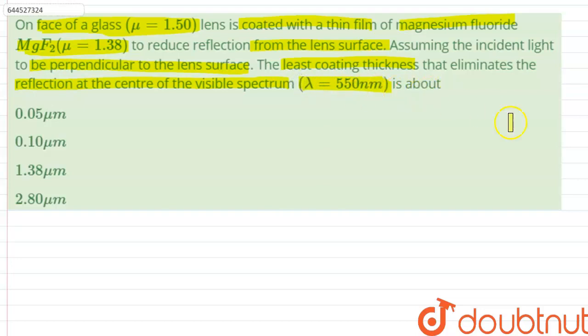So the question is asking us to calculate the least thickness that will eliminate any reflection at the center of the visible spectrum. The reflection will be eliminated when the light rays that are reflected from the air-film interface and film-glass interface interfere destructively.